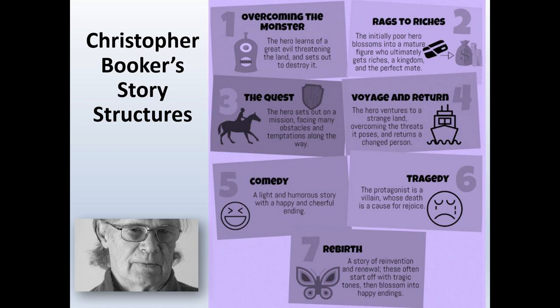I'm going to go through them one to seven and then apply them to one of my chosen novels. Number one is the idea of overcoming the monster. Booker argued this consists of a hero or protagonist who learns of a great evil threatening a land and sets out to destroy it. This could be a physical monster — many horror films fit this plot — or a more conceptual threat posed on society that the hero must stop.